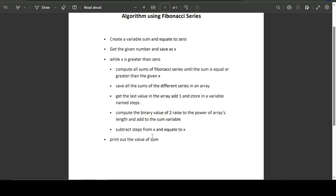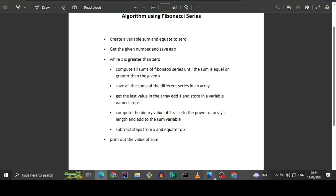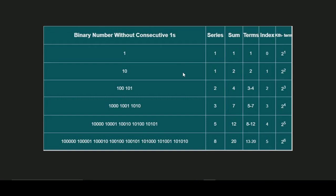I'll be showing you how Fibonacci comes into play. Looking at the table: we have binary numbers without consecutive ones, the series formed, the sum of the series, the index, and the Kth term. For values starting with 1, there's one valid binary number. For values starting with 10, also one. For values starting with 100, there are two (100 and 101). For 1000 there are three, for 10000 there are five, and for 100000 there are eight — you see the Fibonacci series appearing.